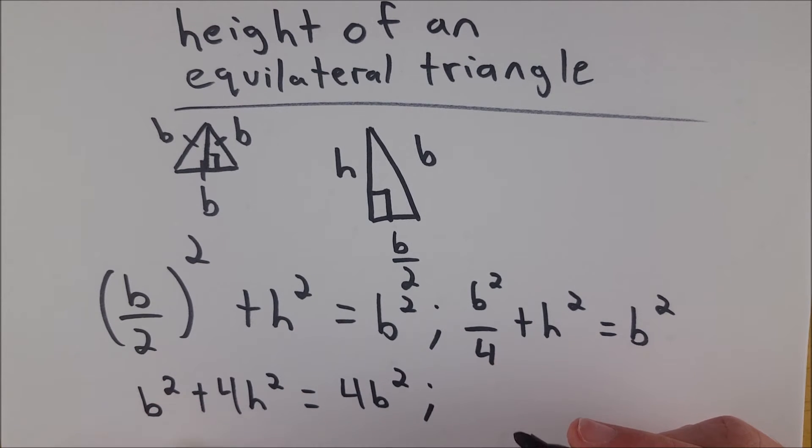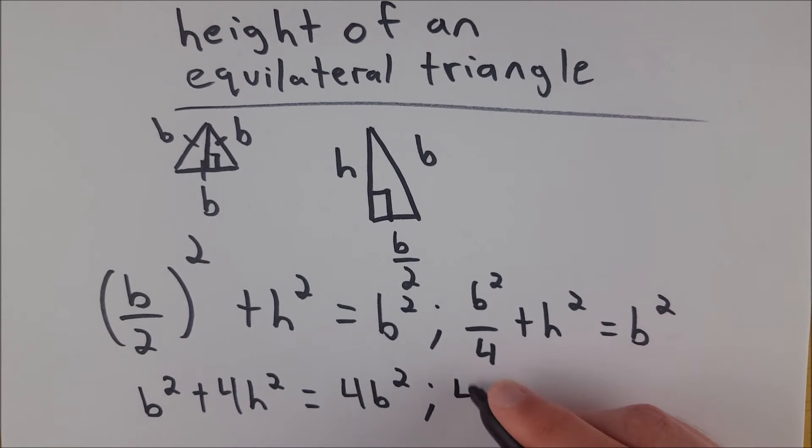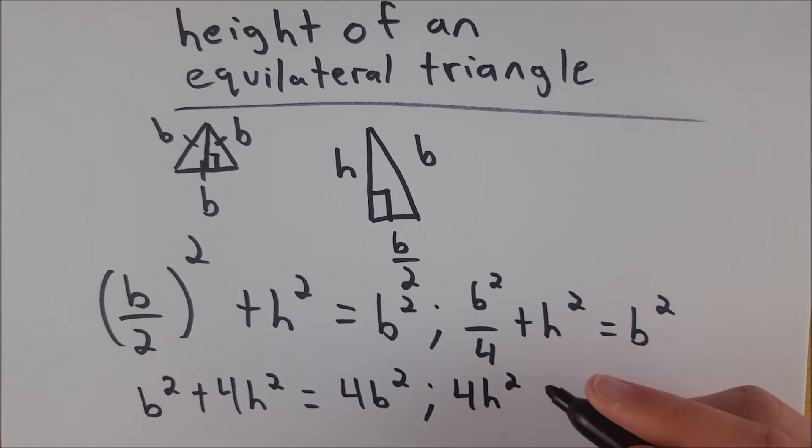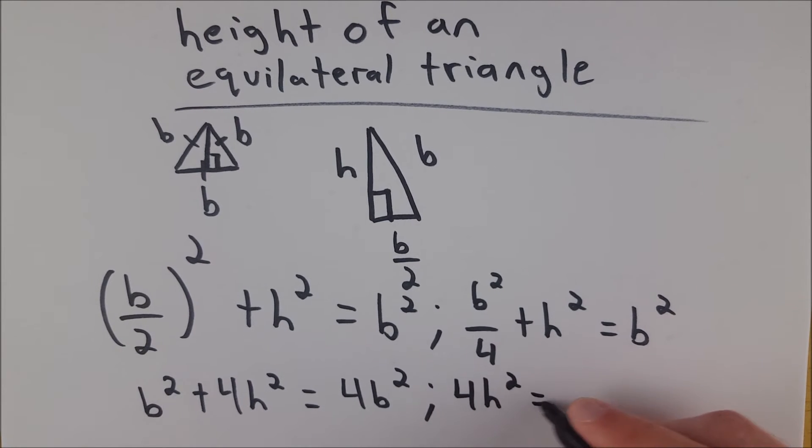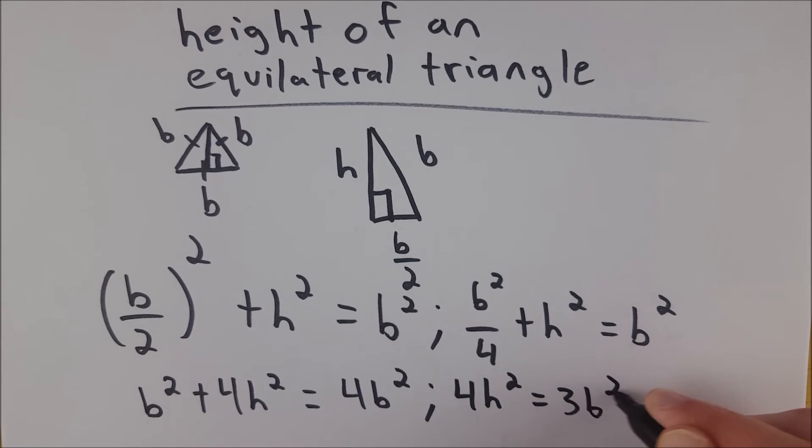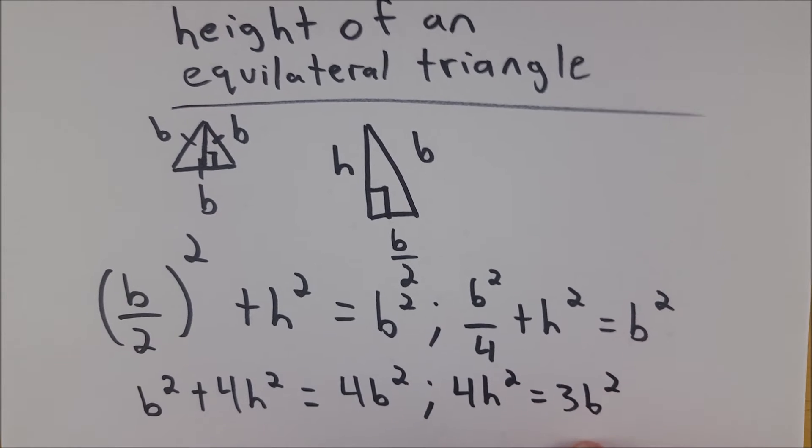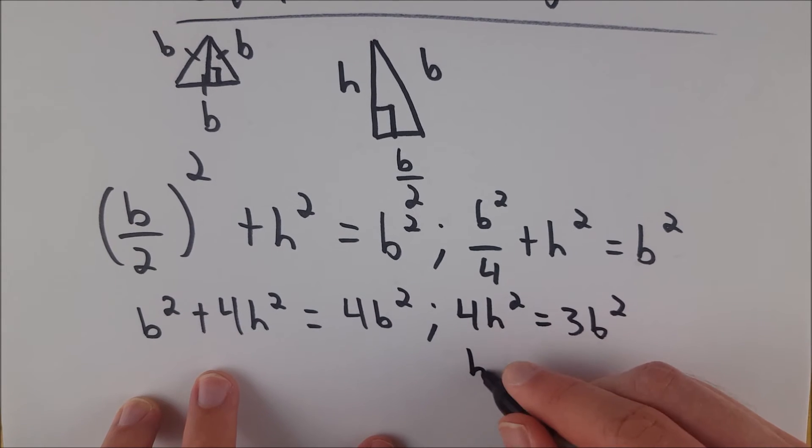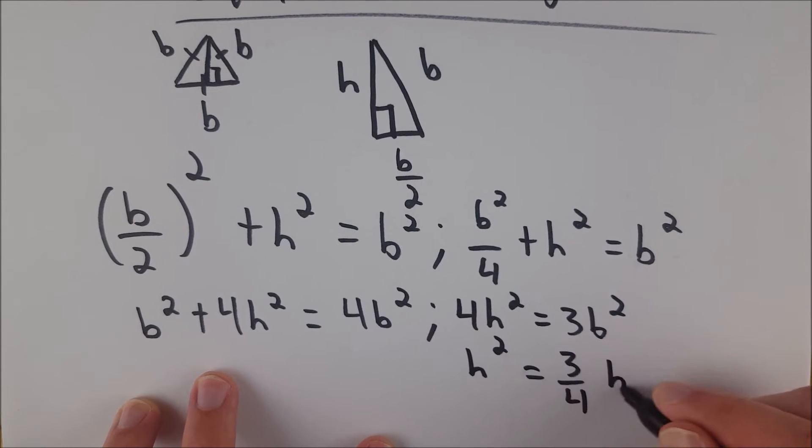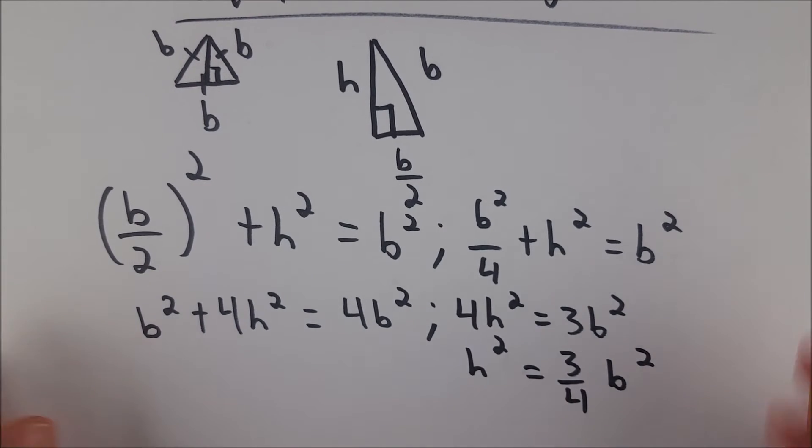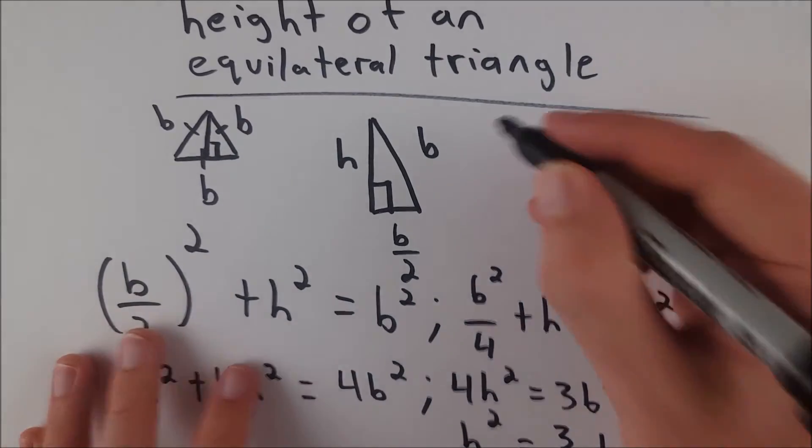And now we can subtract the B squared from both sides as we try to get H by itself, leaves us with four H squared equals three B squared, divide everything by four, we get H squared equals three fourths B squared, and then we just have to take a square root. I'm going to do that right up here.